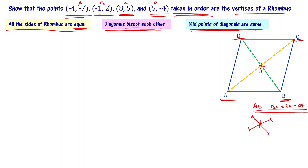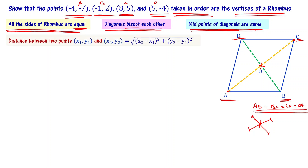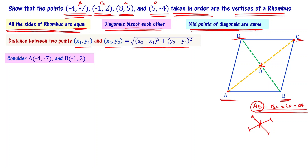First, all sides of the rhombus are equal. For the distance between two points x1, y1 and x2, y2, we use the distance formula: square root of (x2 minus x1) whole square plus (y2 minus y1) whole square. We assign A as x1, y1 and B as x2, y2 and substitute them into this formula.